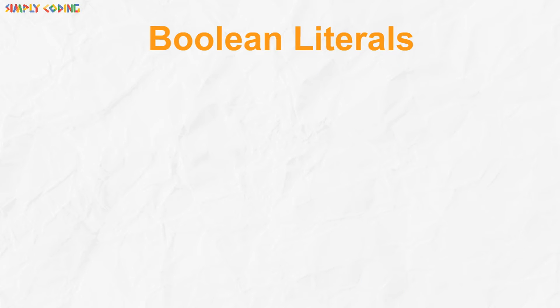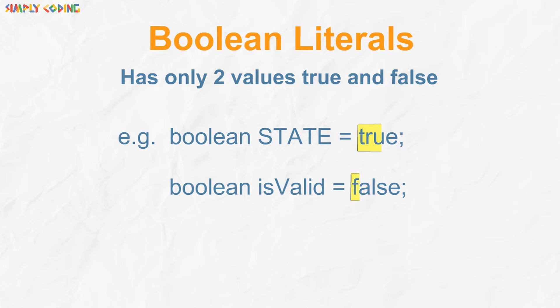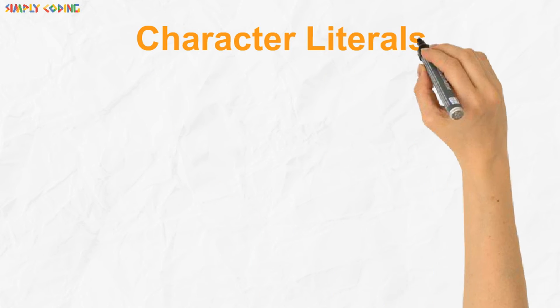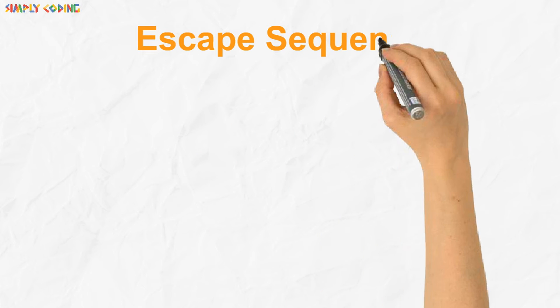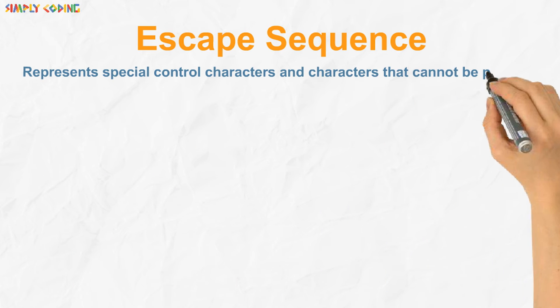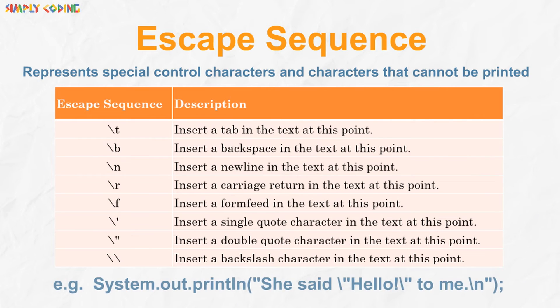Next is boolean literal which has only two values true and false as given in this example over here. Next is character literal which is one single character enclosed in single quotes. It can also be escape sequence which are special type of character literals. They represent special control characters and characters that cannot be printed. They are represented by a backslash followed by a character quote. For example, slash t is used to insert a tab, slash n is used to insert a new line, slash quote is used to insert quotes as that is a special control character, etc.